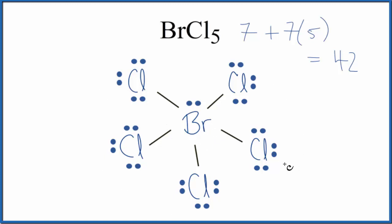If we would check the formal charges for each atom here, we'd find that they'd be zero. So that means that this is the best or most likely Lewis structure for BrCl5.